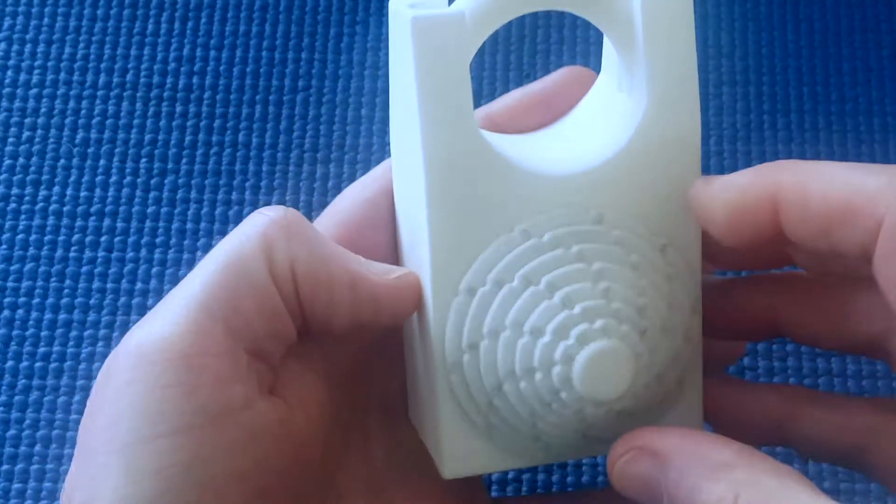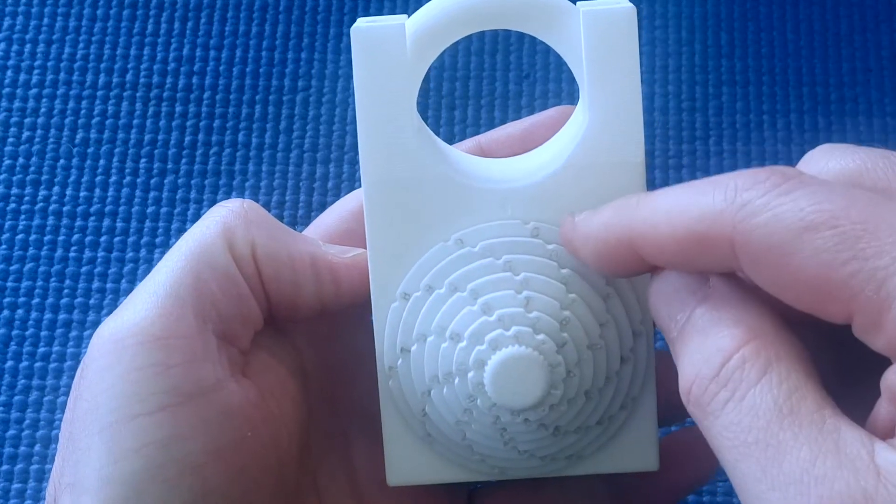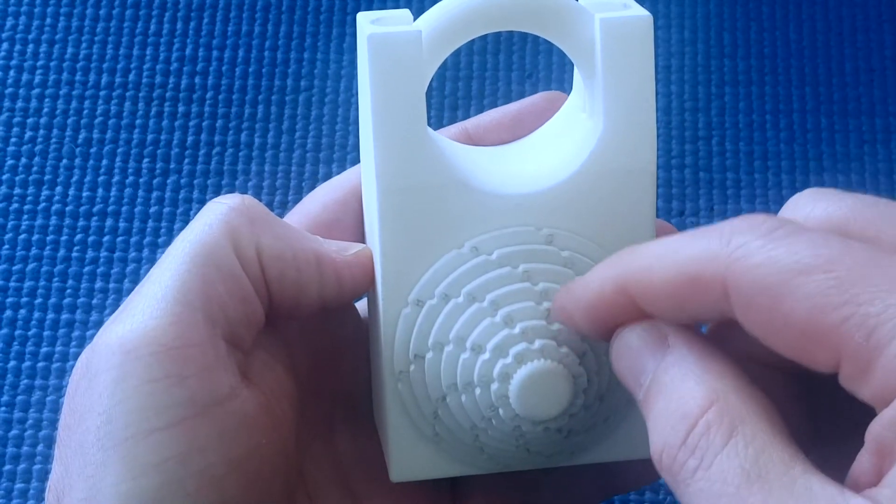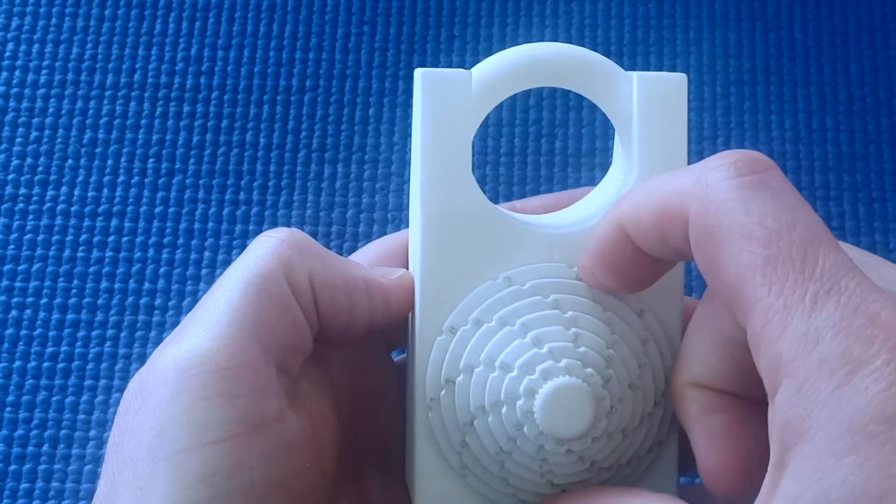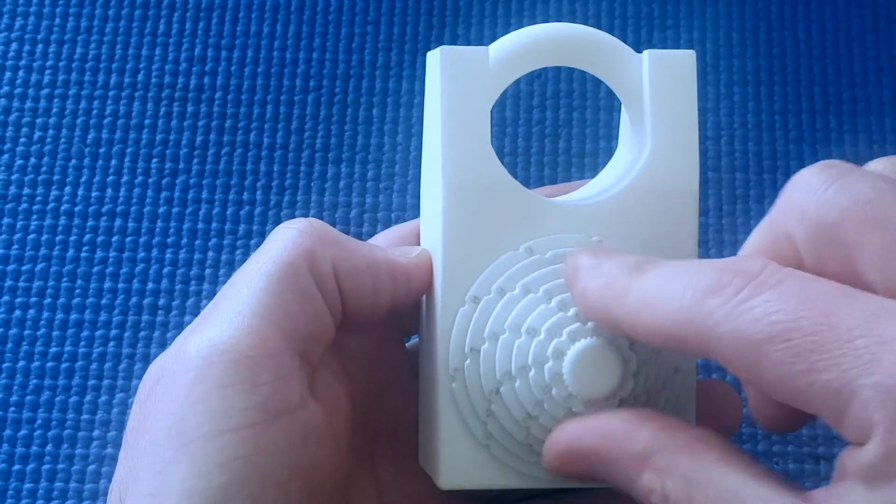This is the latest design. It's got 10 numbers per wheel and 1, 2, 3, 4, 5, 6, 7 wheels. So that's 10 million combinations.